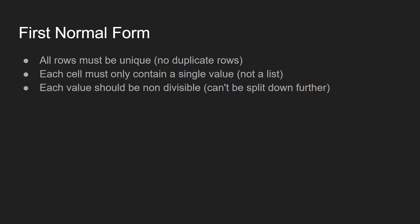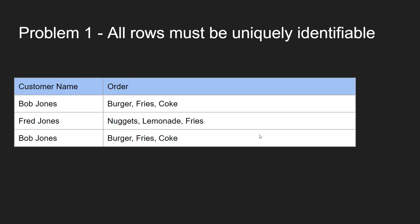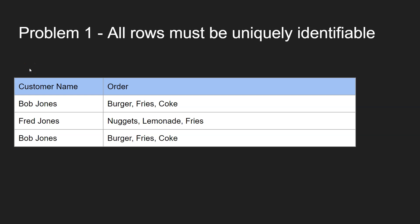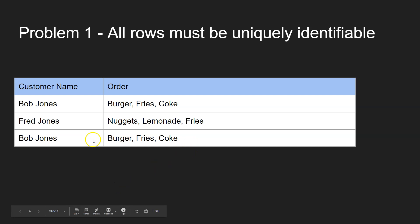Let's have a look at an example. We've got a table of takeaway orders here, and for each takeaway order we've got a customer name and a customer order. Bob Jones ordered burger, fries, and Coke. Fred ordered nuggets, lemonade, and fries. And then Bob also ordered burger, fries, and Coke. The problem is we can't tell the difference between these two rows — we have no idea which order was ordered first. So we need to change that because they need to be uniquely identifiable.